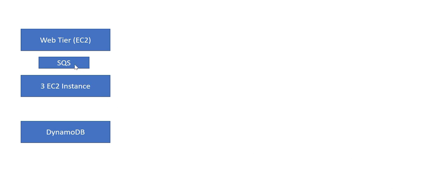What do we mean by isolation? Suppose you don't have SQS. If there are 200 requests from the web tier going directly to the EC2 instances in the middle tier, and that middle tier can only handle 50 requests, the remaining requests will time out. With SQS in between, it holds the requests in queue. So if the middle tier is processing 50 requests at a time, the remaining 150 stay in the SQS queue. Using FIFO logic, as slots free up, more requests are pulled from the queue. No data is lost — all requests are catered and sent to DynamoDB and back to the user.